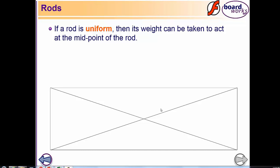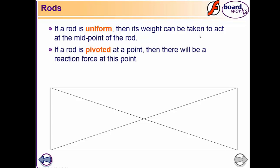Dear students, we will find out about a rod. We will discuss the two types of rods: uniform or non-uniform. If a rod is uniform, then its weight can be taken to act at the midpoint of the rod. If a rod is pivoted at a point, then there will be a reaction force at this point.